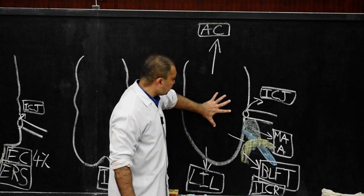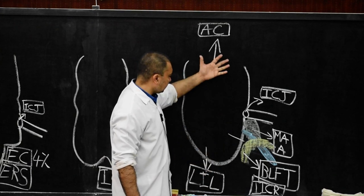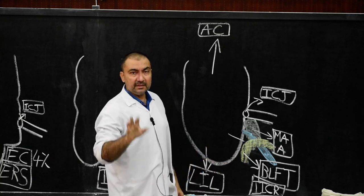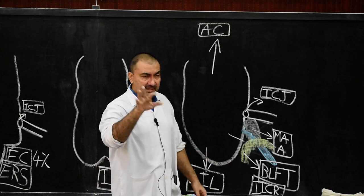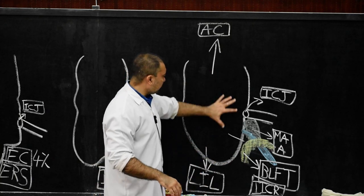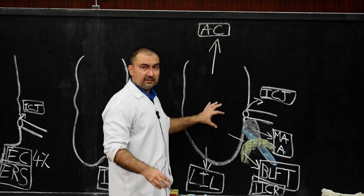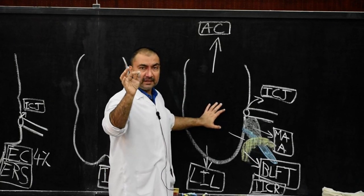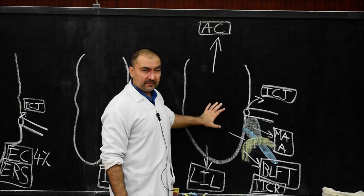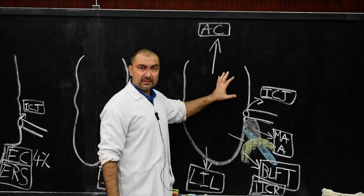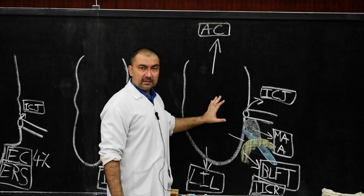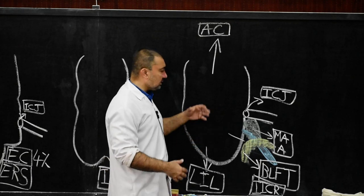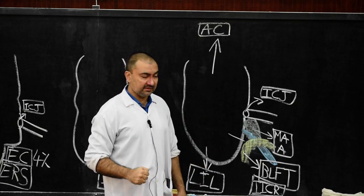Now anterior relations: anteriorly, the entire cecum is covered by the skin and coils of ileum. Also, there will be the inferior margin of the greater omentum, which will cover the cecum from the anterior side. Now comes the most important — posterior relations.